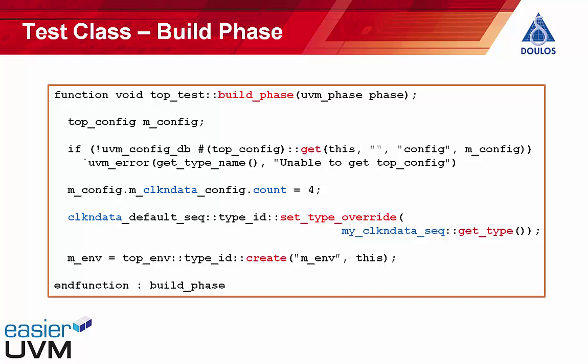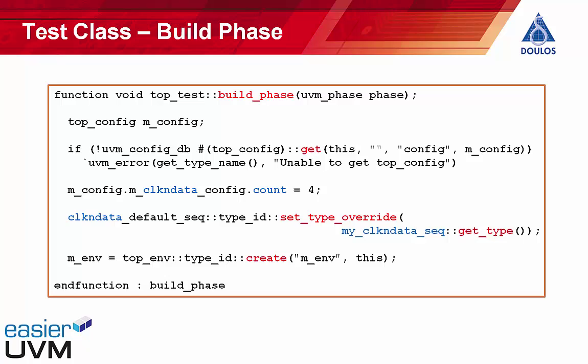Then comes a factory override — more specifically a type override. We're replacing all instances of the class clock_and_data_default_sequence with a new class, my_clock_and_data_sequence. This code is generated by the Easier UVM code generator, which creates a default sequence for each agent. We're setting a factory override to replace that default sequence with a user-defined sequence. After making the configuration database settings and factory overrides, we then call the create method to instantiate the environment. And that's the complete test.